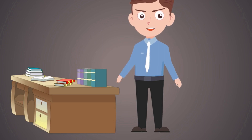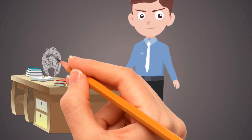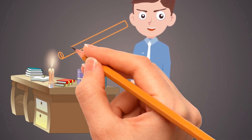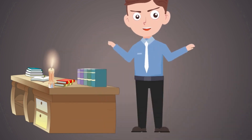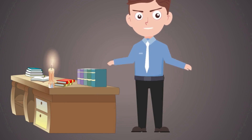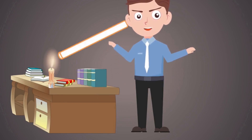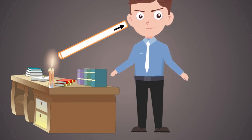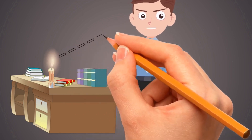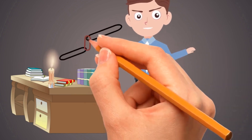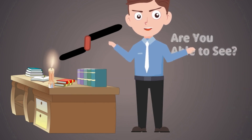Let us take an example. We'll have one candle and we'll take one hollow pipe and we'll try to see the light through the pipe. We will be able to see the light because light rays are coming from the candle to our eyes. So light is traveling in a straight path.